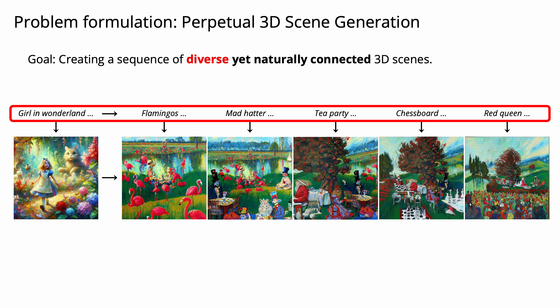By diverse, we mean we want to generate 3D scenes that have different objects, backgrounds, and spatial layout. For example, here we start from a scene with a girl in Wonderland, and then we go to see flamingos, the Mad Hatter, the Tea Party, and so on.